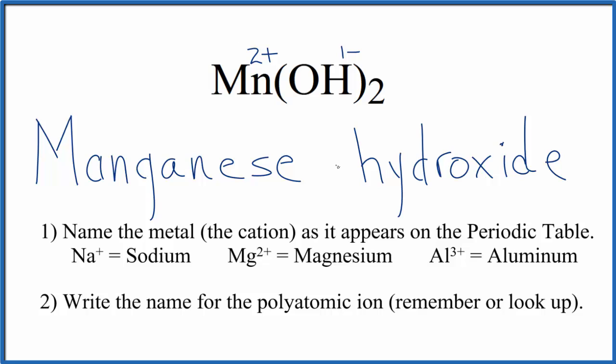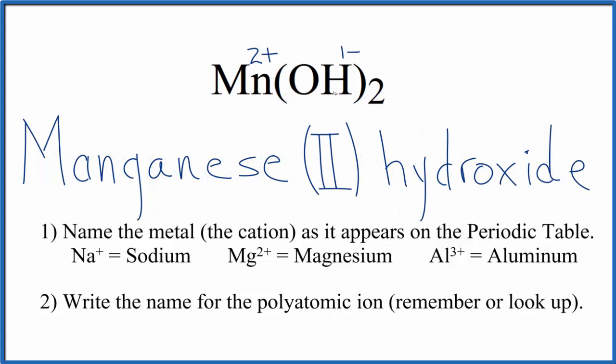So manganese is a transition metal. We need to write Roman numeral II between the names with parentheses. The name for Mn(OH)₂ is manganese(II) hydroxide. This Roman numeral II is because we have the 2+ on the manganese. This is Dr. V, and thanks for watching.